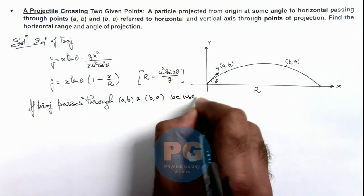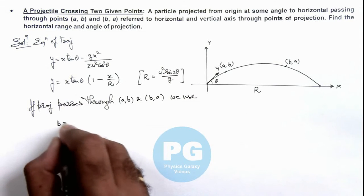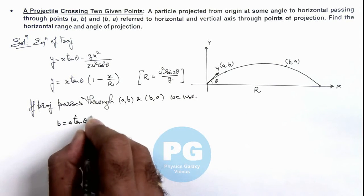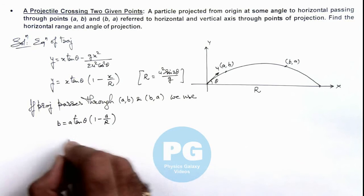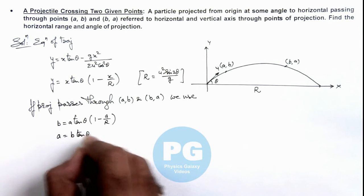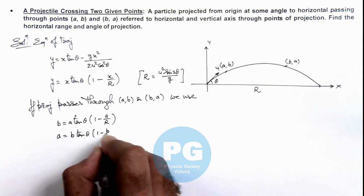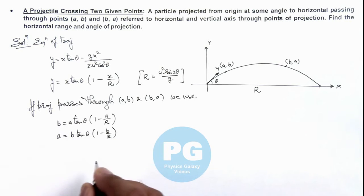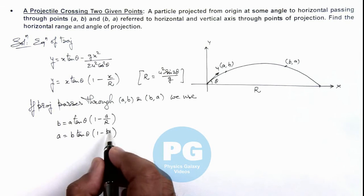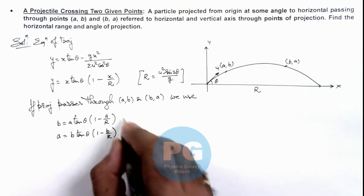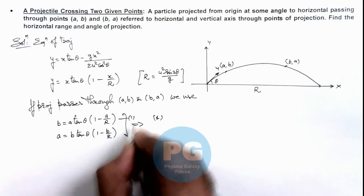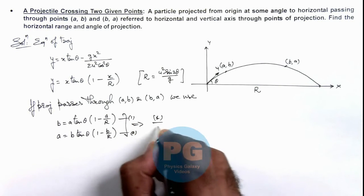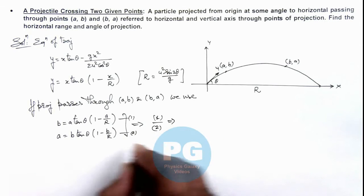we use - here we can write b equals a tan theta multiplied by 1 minus a by R, as well as we can write a equals b tan theta multiplied by 1 minus b by R. And in these 2 equations if we divide, here you can see if we go for - this is first equation, this second equation, we divide 1 by 2.